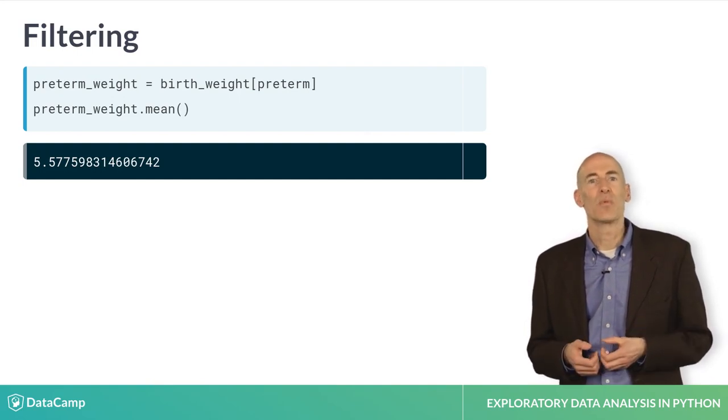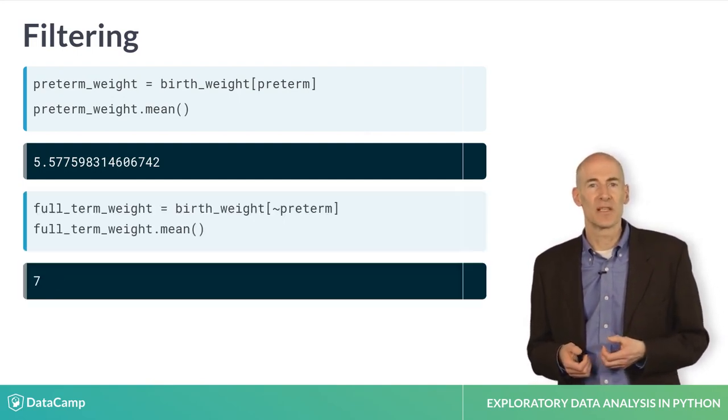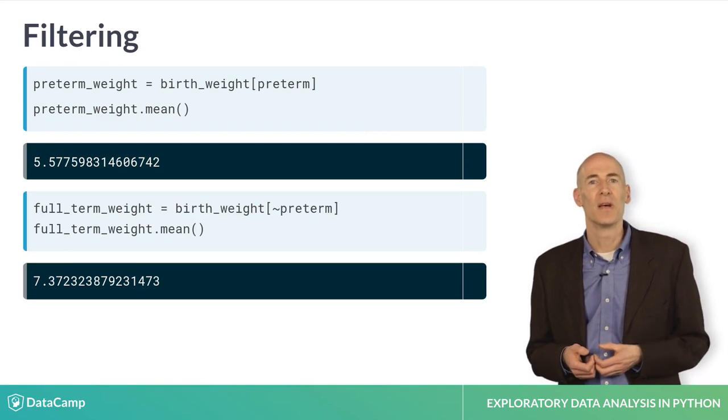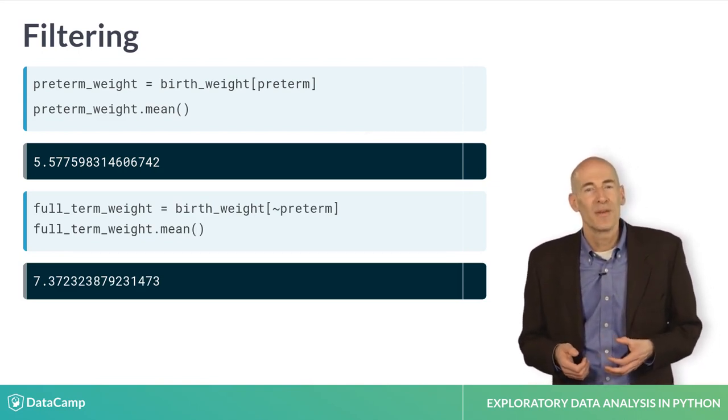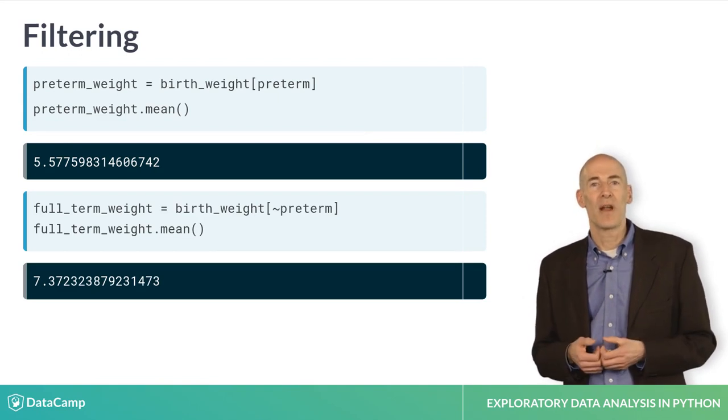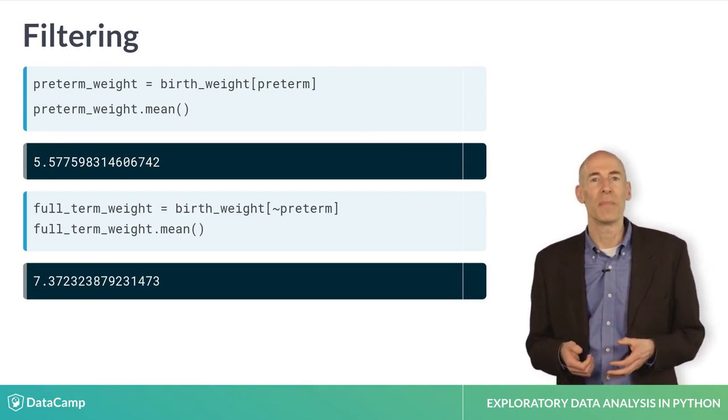To select full-term babies, we can use the tilde operator, which is logical not, or inverse. It makes the trues false and the falses true. Not surprisingly, full-term babies are heavier, on average, than preterm babies.